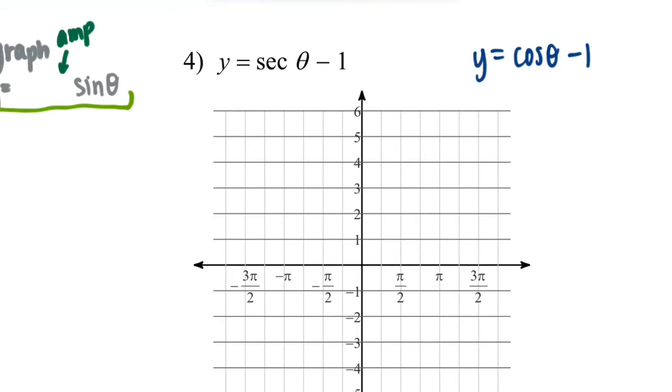So secant comes from cosine. So we're going to plot y equals cosine of theta minus one. Now this minus one right here is on the outside of the function. So it's translated down one unit, which is going to take our midline and shift it down. And that's the only transformation we're dealing with.